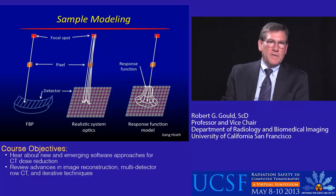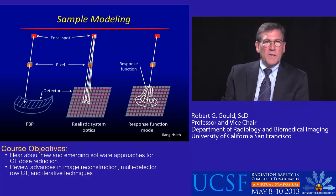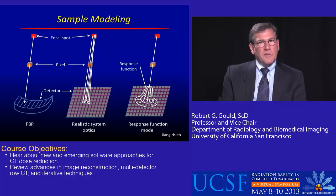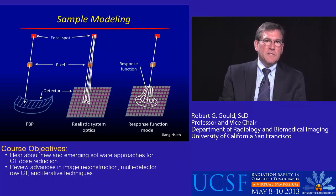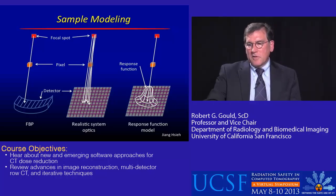Really, it's going from modeling in filtered back projection — where you assume the source, the object or voxel, and the detector are all a point — to where you have a realistic system with a focal spot that has a finite area and a voxel that has a realistic volume. The net result is a response function within the detector system itself.